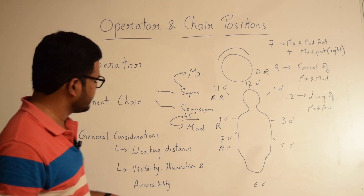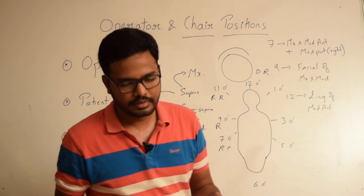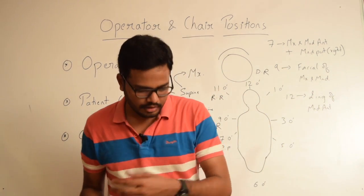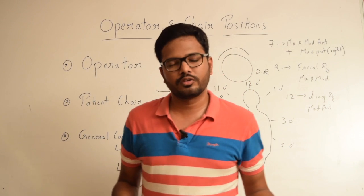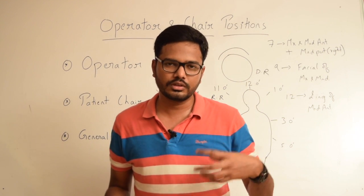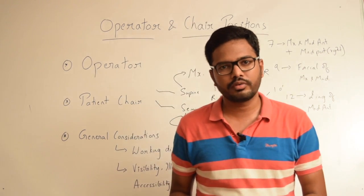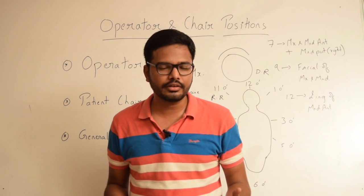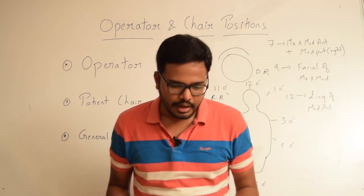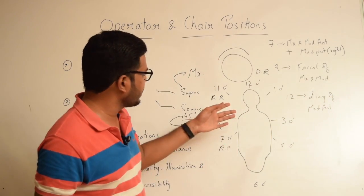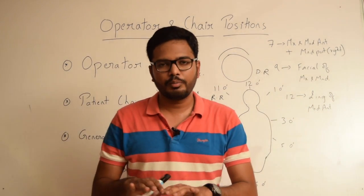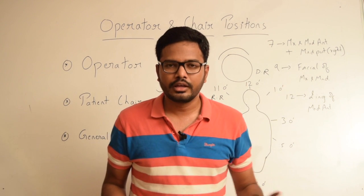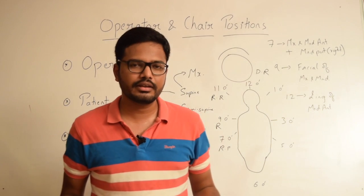The next aspect is visibility, illumination, and accessibility. We need to have proper optical aids like dental loupes or operating microscopes to improve the visibility range of the operating field. Bright illumination is mandatory, and by following these operator and chair positions we will have proper accessibility to the operating field.